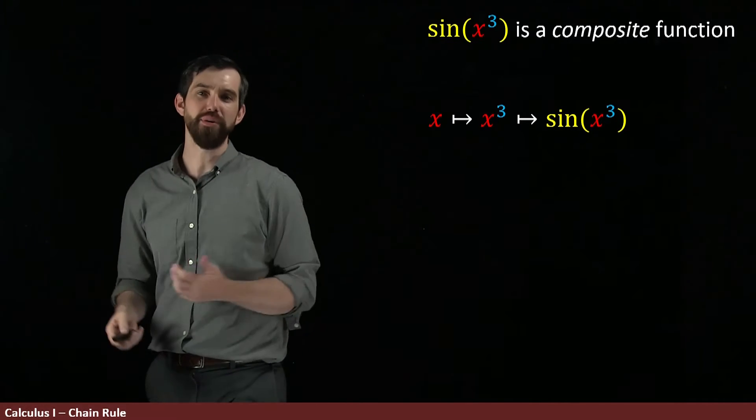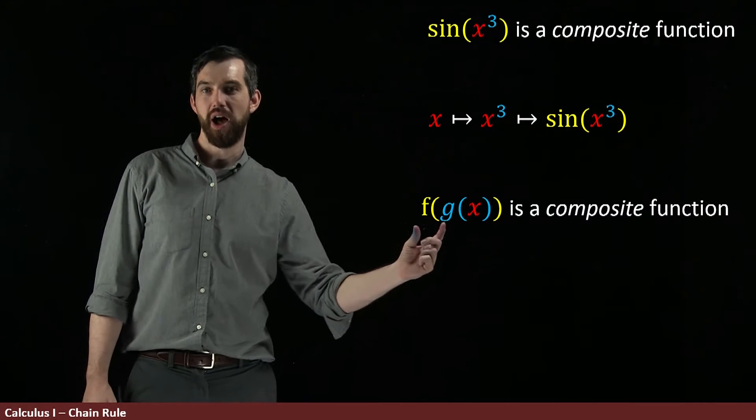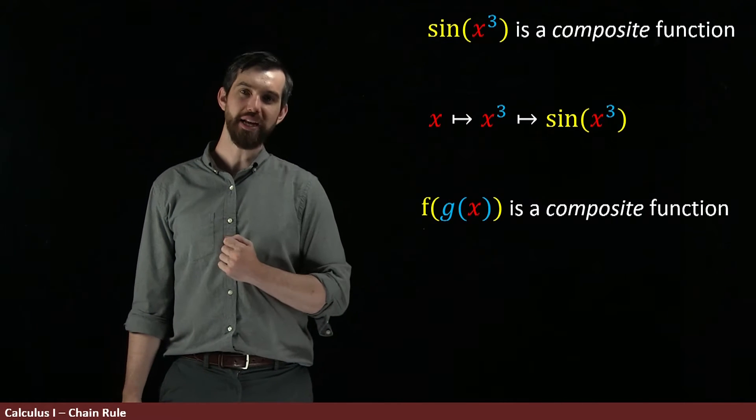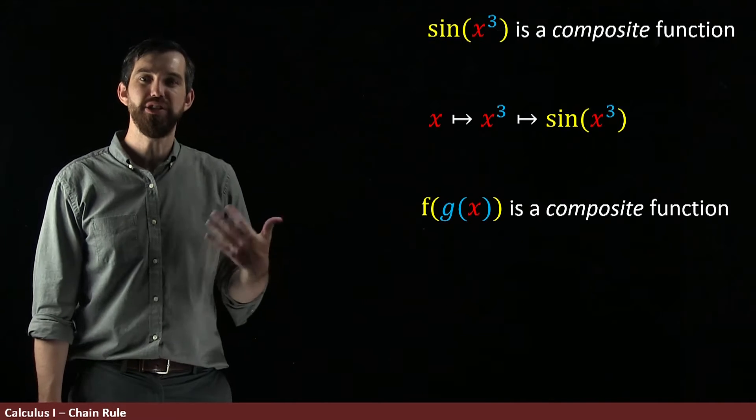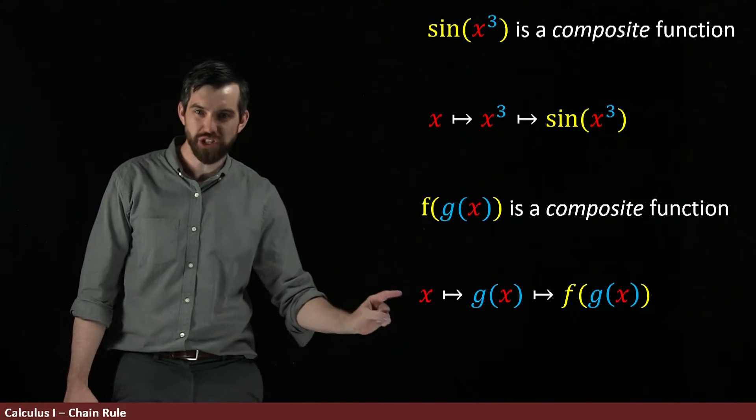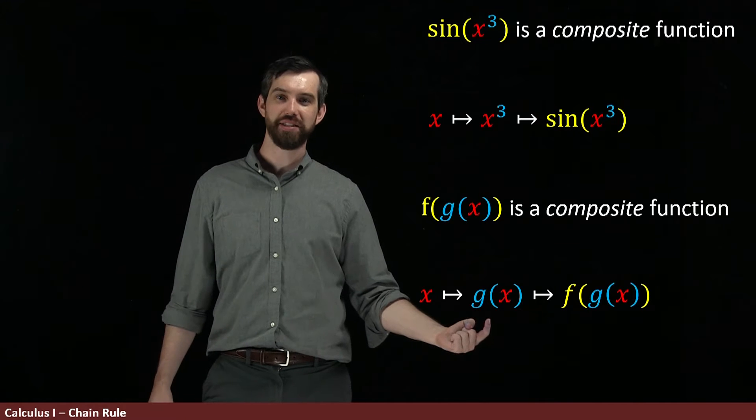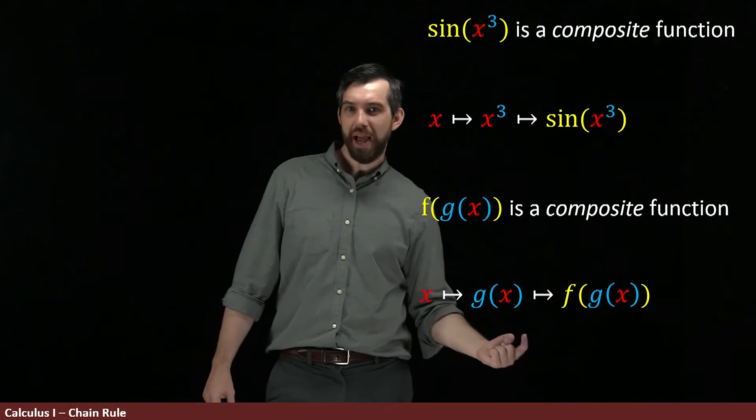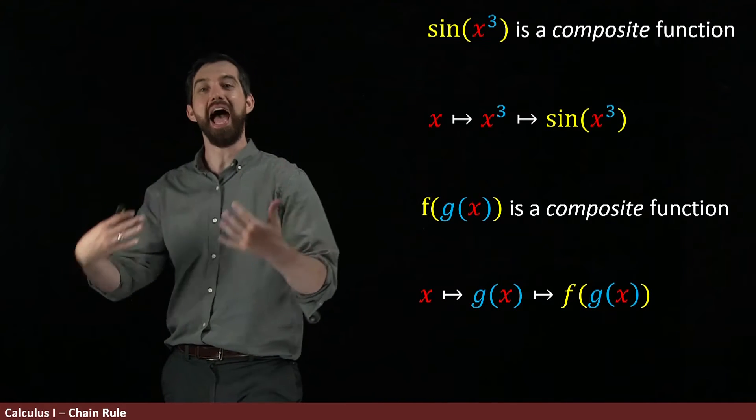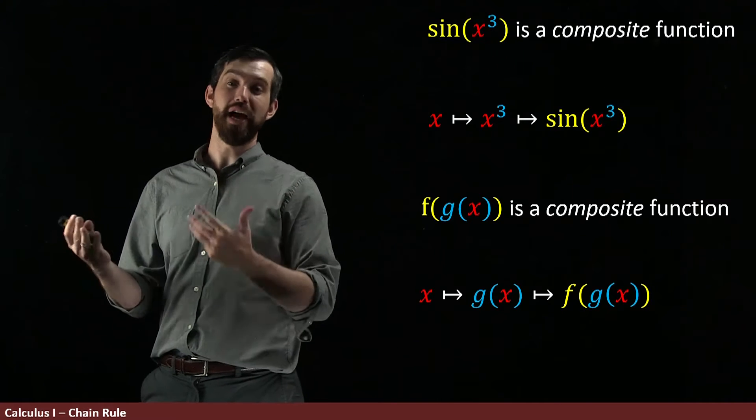Or more generally, if I'm going to have f of g of a variable x, what you're doing is starting with this value of x. You are doing the first function, the g, the inside, to make g of x. And then you're going to apply the outside function so you get f of whatever g of x was going to be.